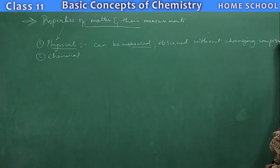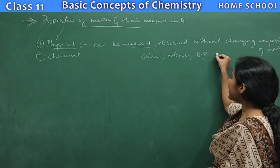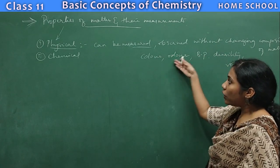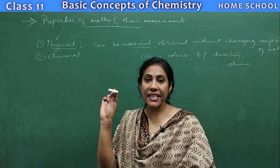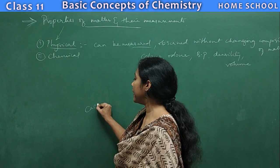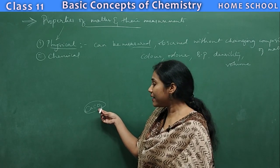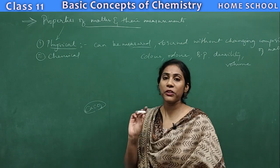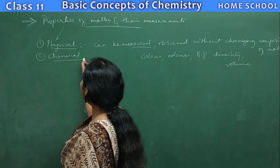Examples of physical properties include color, odor (in the sense of smell), boiling point, density, and volume. For example, this chalk piece — its composition is calcium carbonate. If I have to observe its color, I can just observe this without changing the composition; the ratio of calcium, carbon, and oxygen does not change. A property you can observe without changing the composition is what we call a physical property.